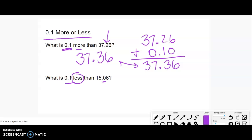This is where I can think, I can change one of my wholes, which is the same thing as 10 tenths, so then I have 9 left, so I'd get 14.96.